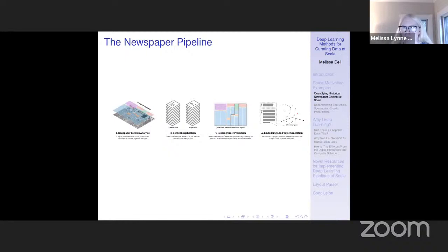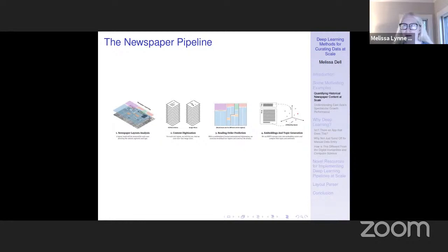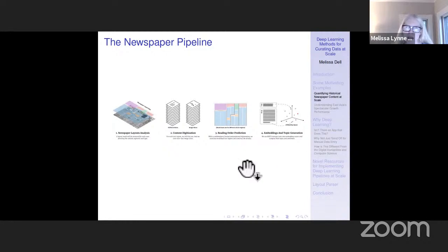Then we need to put the content back together by predicting reading orders, which again can be done with deep learning. Finally, we use modern NLP methods — transformer-based NLP models — to think about querying content: what are these newspapers talking about? Using a dense method for passage retrieval, we can think about the topics that appear, their sentiments, etc. So we can really do a lot of cool analysis with modern NLP methods once we have that structured data.